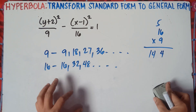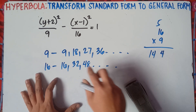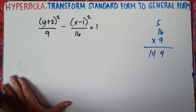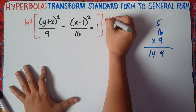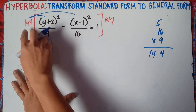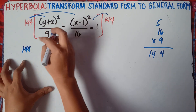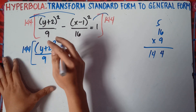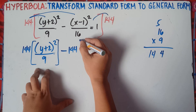For part 1, we did it manually because the numbers were small. Here with 9 and 16, we simply multiply to get 144 as the LCM. Once you get the LCM, multiply both sides of the equation by 144. So: 144 times the equation for y plus 2 quantity squared over 9, minus 144 times x minus 1 quantity squared over 16, equals 1 times 144.